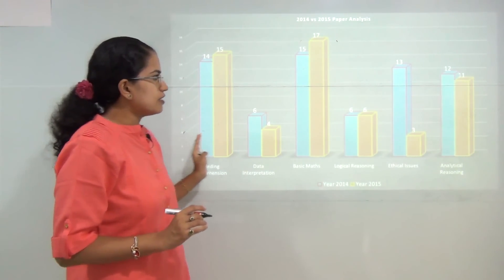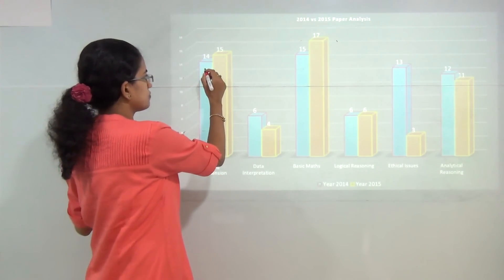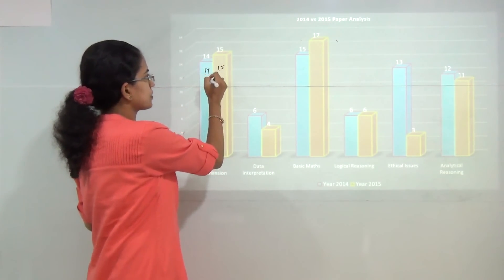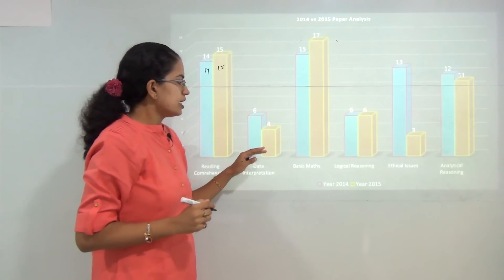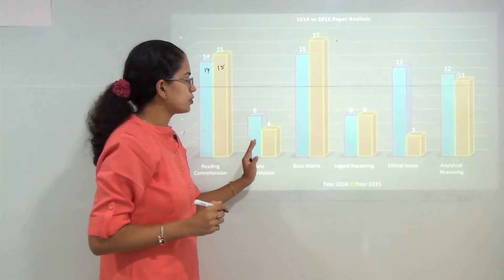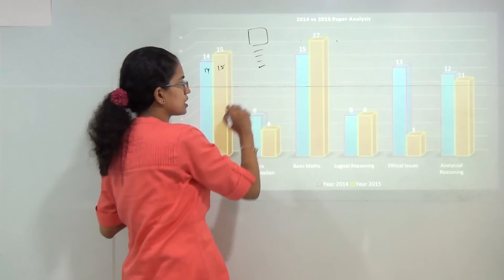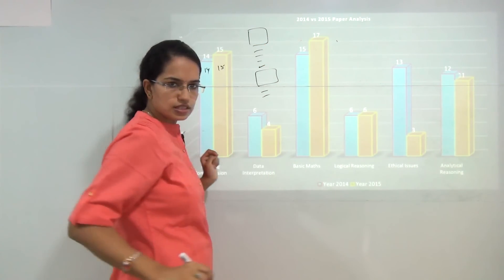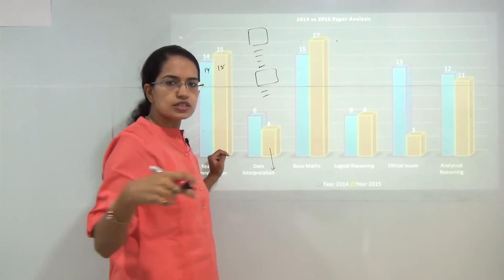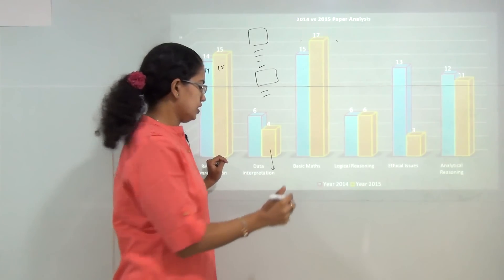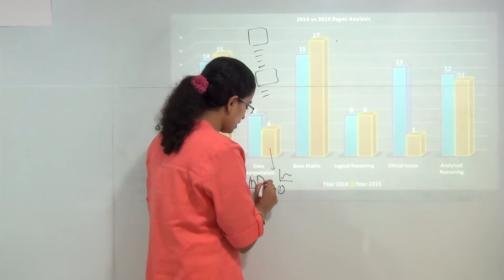Here is a comparative analysis of the number of questions asked. The blue represents 2014 and the other bar shows 2015. Reading comprehension had nearly equal number of questions in both years. For data interpretation, in 2014 there was a single graph with two or three questions, plus a table with two or three questions. However, this pattern changed for 2015, where there were individual questions on separate graphs.